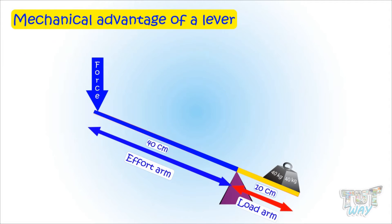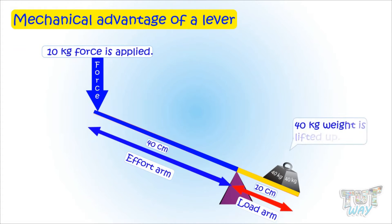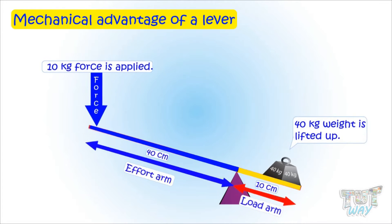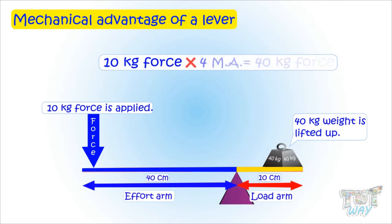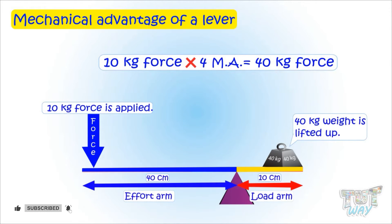That means it will multiply the applied force by 4. If you apply 10 kg of force, it will make it 40 kg of force. In other words, in order to lift a weight of 40 kg, you need to apply a force of only 10 kg.